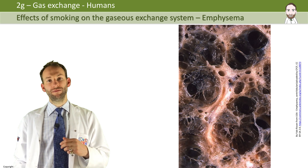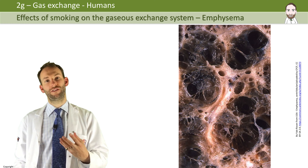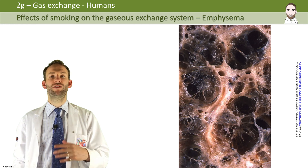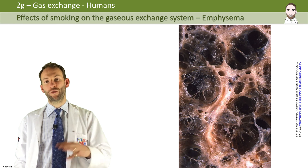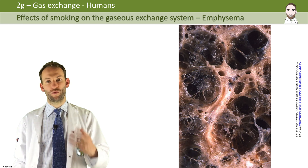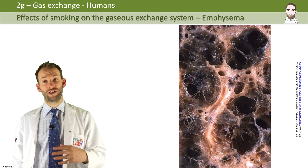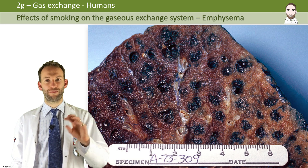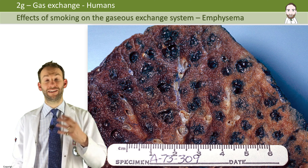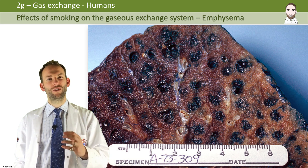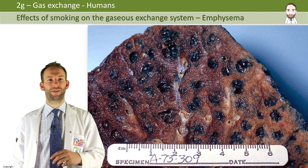Lastly, emphysema. This is a horrible disease caused by smoking where your alveoli start to burst and fuse together. That massively reduces the surface area for gas exchange in the lungs. The sufferer won't be able to carry out basic tasks like walking due to this lack of oxygen, and there's no cure for it. You can see in this lung the big holes where all the alveoli have burst — in this case they're all full of tar from the cigarettes, which is why they're black.